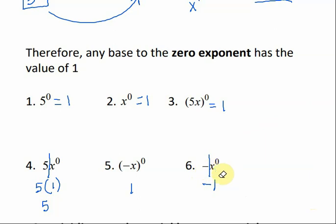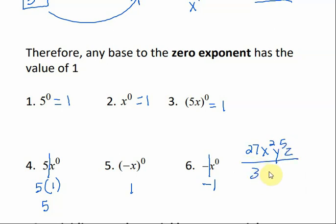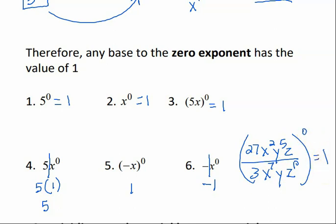Even if it's something really complicated, like 27x squared y to the 5th z over 3x to the 7th — if it's all in parentheses raised to the 0 power, then it equals 1. Anything raised to the 0 power is 1.